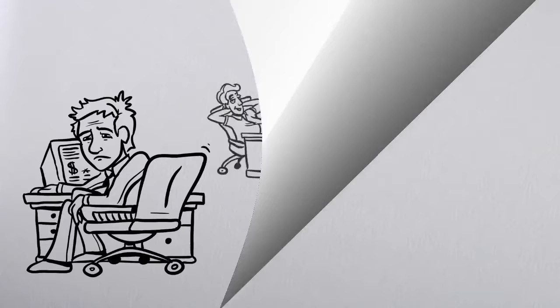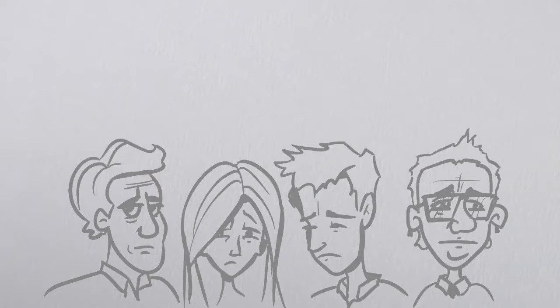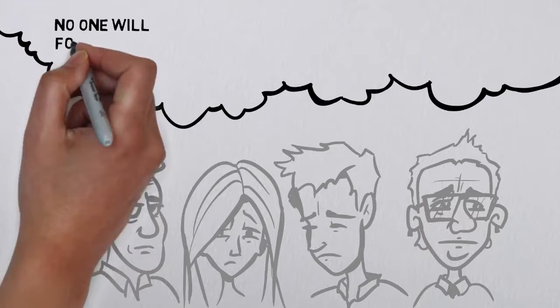You can become visible and influential by letting go of your reluctance. In most organizations, 70% of those who are expected to lead and influence are reluctant to do so.